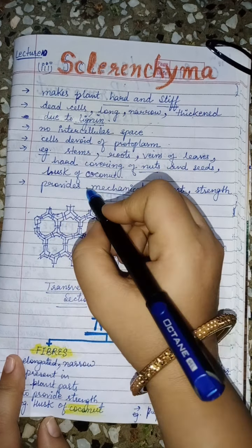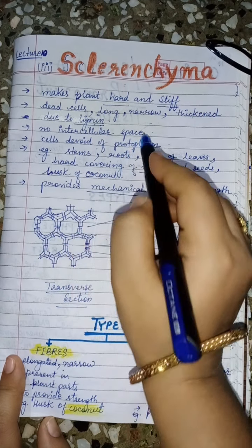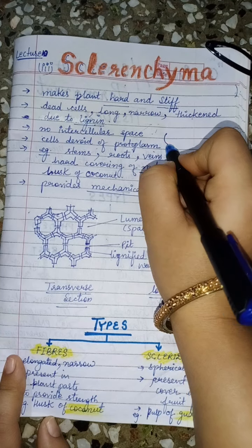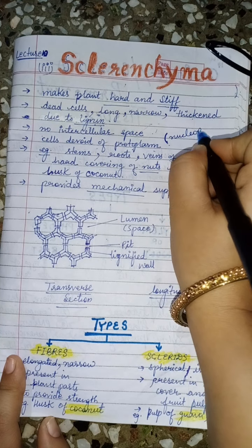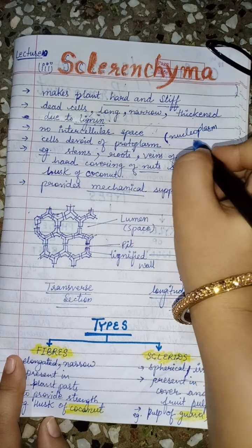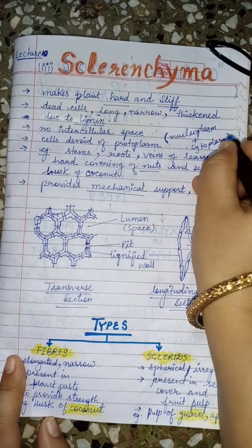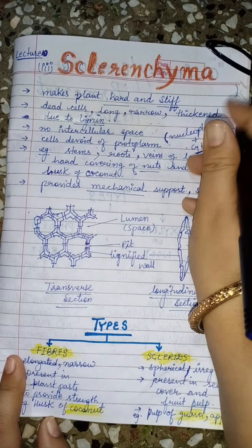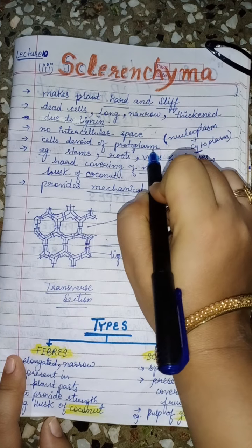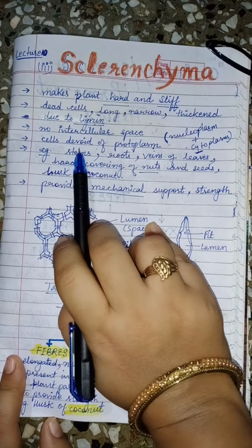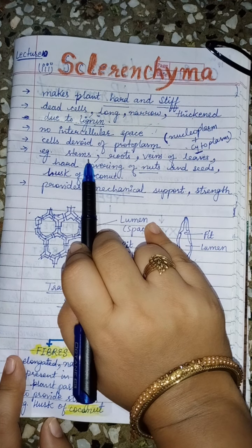There is no intercellular space between sclerenchyma cells. The cells are devoid of protoplasm. Protoplasm, as we learned in the cell chapter, is nucleoplasm plus cytoplasm — the fluid inside the nucleus and the fluid inside the cell other than the nucleus together form the protoplasm.